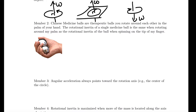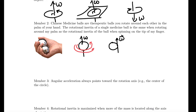Chinese medicine balls: you have a ball spinning on your finger about one rotation axis, and then a ball spinning in place like a rotating Earth about a different rotation axis versus one where the entire ball swings around the rotation axis. The rotational inertia is greater for the latter case. The more of the mass that's farther away from the rotation axis, the higher the rotational inertia.